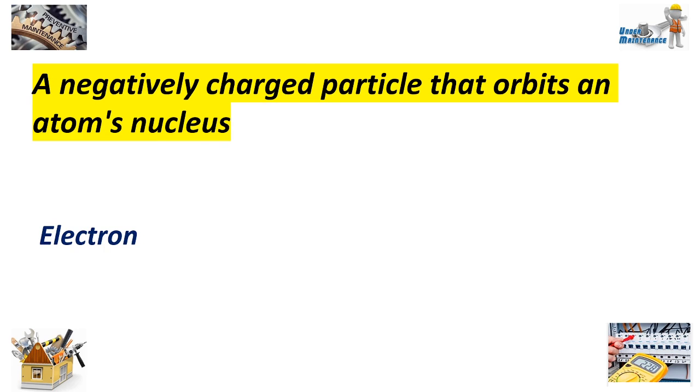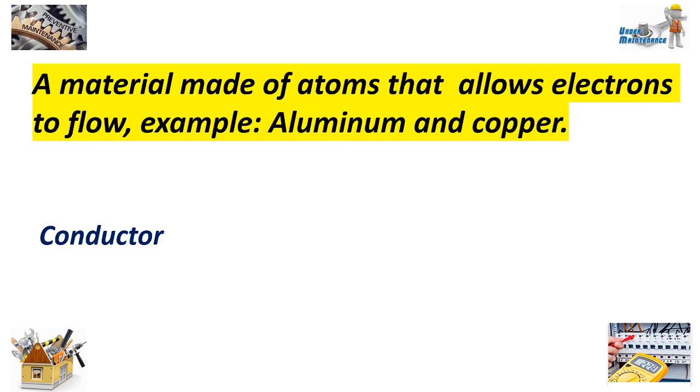A negatively charged particle that orbits an atom's nucleus? Answer: Electron. A material made of atoms that allows electrons to flow, example aluminum and copper. Answer: Conductor.